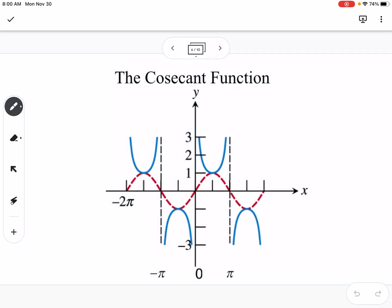Cosecant is the reciprocal of sine, so it's 1 over sine. If we think of this, we know that we have a fraction going on, so we're going to have asymptotes where sine is equal to 0. That is why you see the red sine graph graphed right there, and you'll notice everywhere that sine is equal to 0, we have an asymptote.